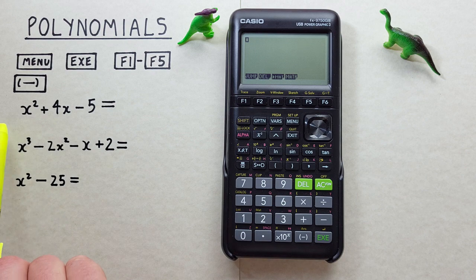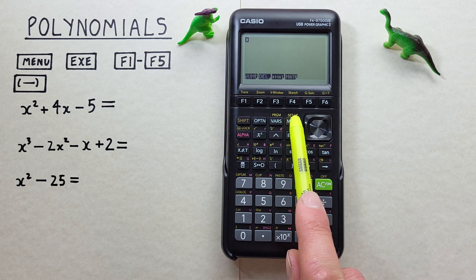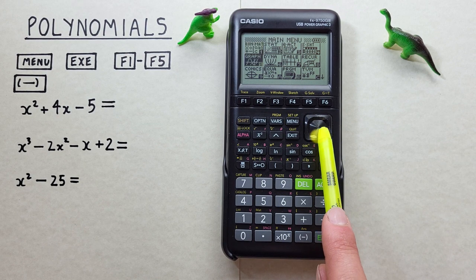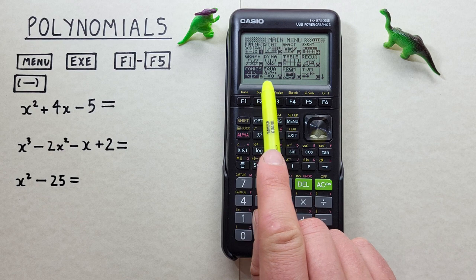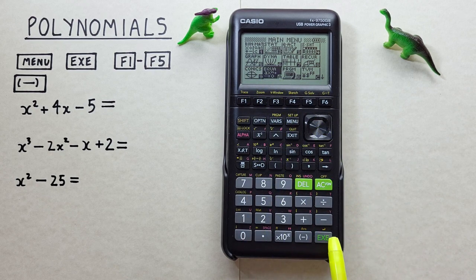Let's say we're given a quadratic like this and wanted to solve for X. First we need to go to the main menu with the menu key, and then we want to scroll down to the equation or EQA option there. So we highlight it and press the EXE key.